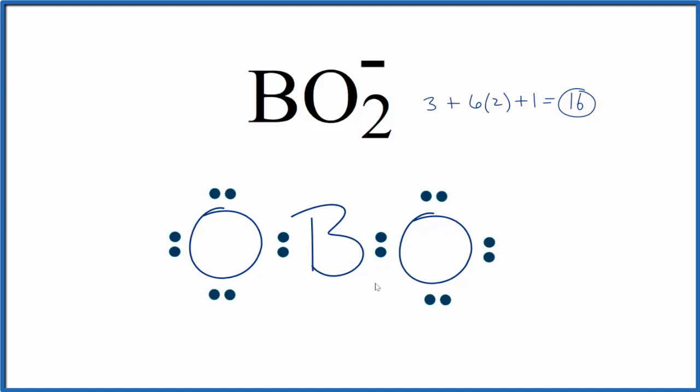Both oxygens, they have octets. The boron only has two, four. So it only has four valence electrons.